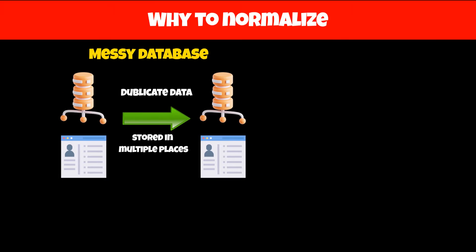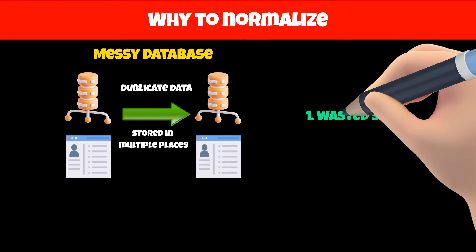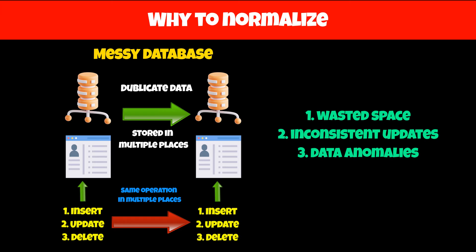Normalization is a process of organizing data in your database to remove redundancy and to improve efficiency. Redundant data means the same information is stored in multiple places. This can cause various issues such as wasted space, inconsistent updates, and data anomalies. For example, if data is present in multiple places, then we have to perform insert, update, and delete operations in multiple places, which is more prone to error. Normalization helps us to avoid all these headaches.